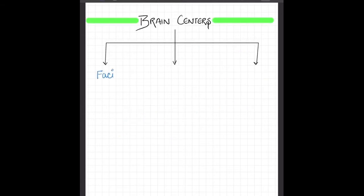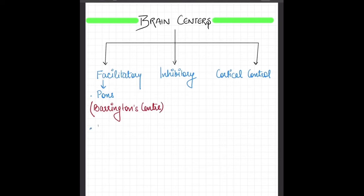Now, we see the CNS control over the micturition. CNS has three types of controls: first is facilitatory, second is inhibitory, third is cortical control. Facilitatory facilitates the micturition, which is located in the pons, and it is also known as Barrington center. Next center is located on the posterior hypothalamus.